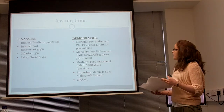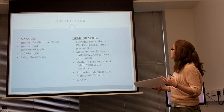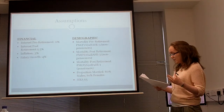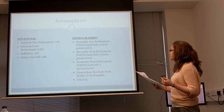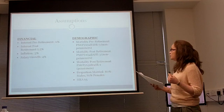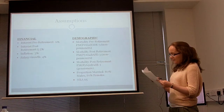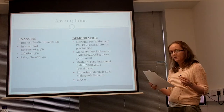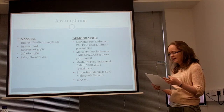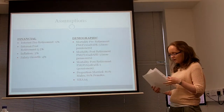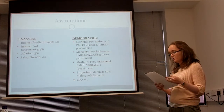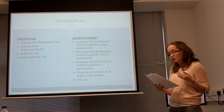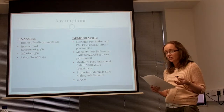Now let's deal with our demographic assumptions. For mortality pre-retirement for non-pensioners, we used PMA 92 base tables with an adjustment of minus 3. For mortality post-retirement, we used again PMA 92 base tables with a slightly smaller adjustment of minus 1. These adjustments were used to convey the improvement in life expectancy over the past two decades due to improvements in healthcare. The smaller adjustment of minus 1 for pensioners reflects that life expectancy has not changed as much for that group.